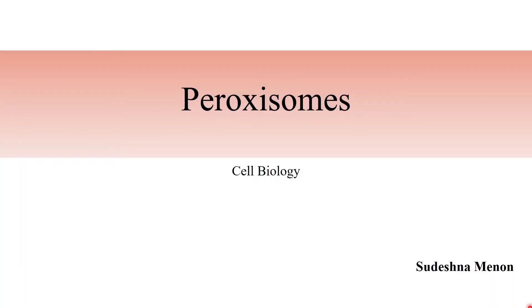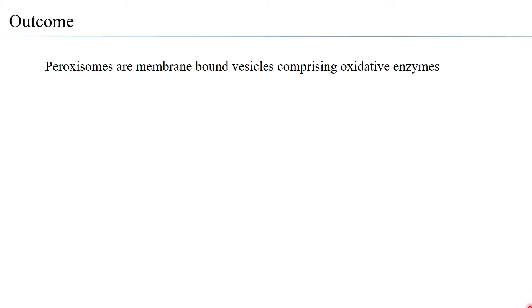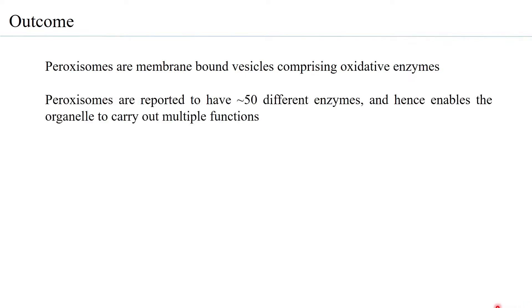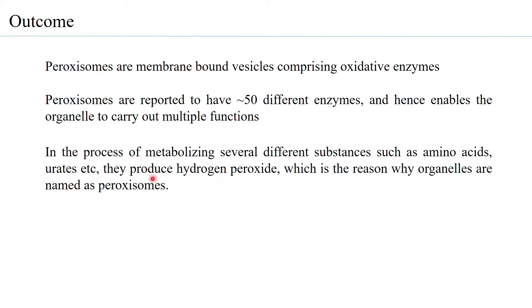Hello everyone. This session gives you an overview of another single membrane vesicular organelle, which is the peroxisome. Peroxisomes are membrane-bound vesicles that comprise oxidative enzymes, and so they are also called oxidative microbodies. Peroxisomes are reported to have more than 50 different enzymes, and these enable the peroxisomes to carry out multiple functions in the process of metabolizing several different substances such as amino acids.